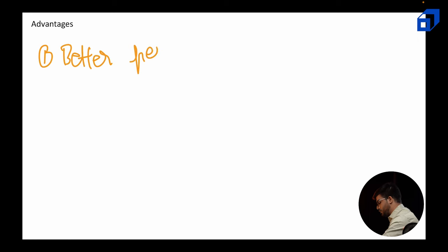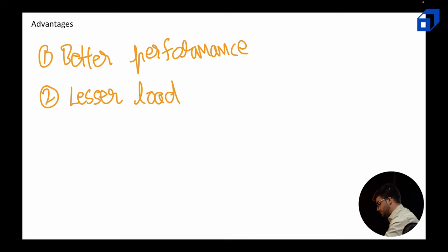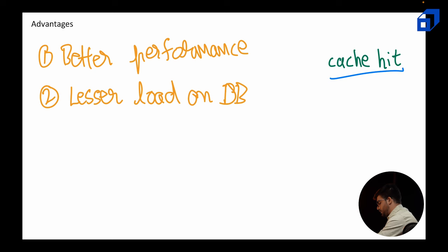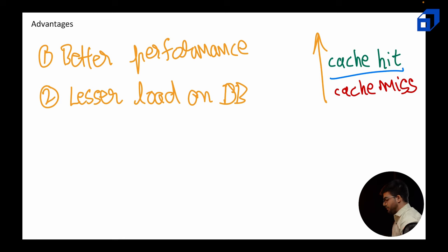Before understanding the next concepts, let's first understand the advantages and disadvantages of using a caching mechanism. Some advantages are quite intuitive. The first one is better performance — that's why we introduced caching. The second is lesser load on the database: since we are fetching a lot from cache, the load on the database is reduced, and retrieval and updating costs reduce naturally. We want the cache hit ratio to be much higher than cache misses and design algorithms to be as optimal as possible.